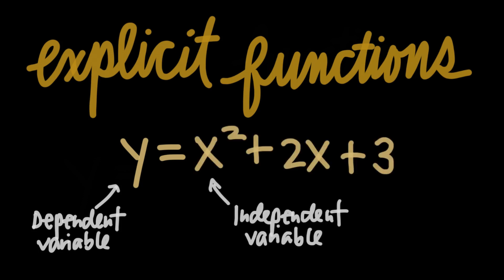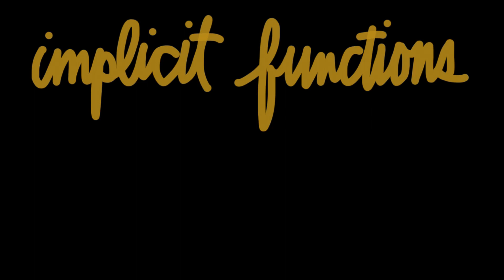These types of functions can be differentiated using our usual methods without any trouble. But if a function is not explicit, that is, if y is not clearly expressed as the function of x, we call it an implicit function.